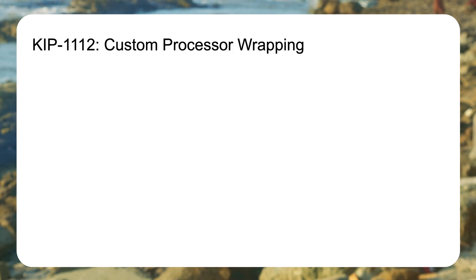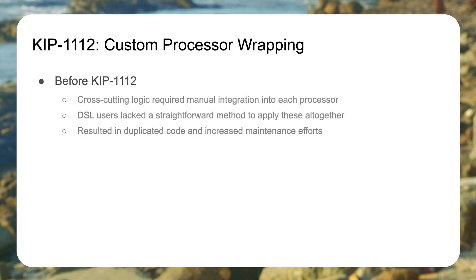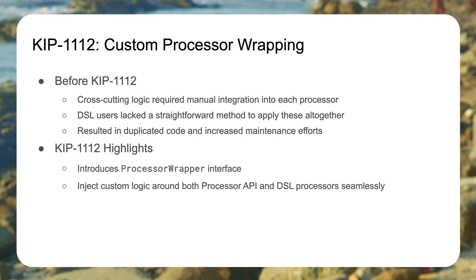KIP 1112 gives us the processor wrapper interface. You might have some cross-cutting concern in a Kafka Streams application — logging is a typical example. If you're using the processor API you can do that manually, but if you're using the DSL you're stuck: you don't have access to log anything going on inside DSL calls. The processor wrapper is a way for you to provide custom code that gets run automatically inside DSL methods, for whatever that cross-cutting concern is. Processor wrapper should make it easier to instrument your Streams applications.